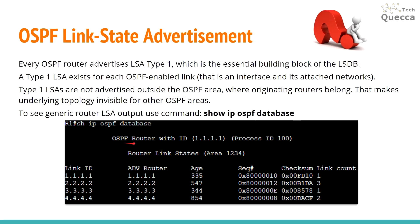You can see the router on which this command was run, the ID of the router — the OSPF router ID is 1.1.1.1 — the process ID of OSPF, and we can see the area. You can also see output for link ID, advertising router, router age, sequence number, checksum, and link count.